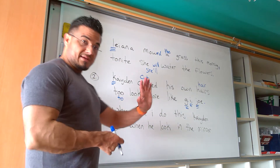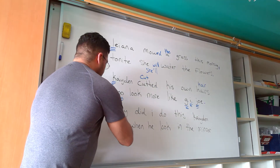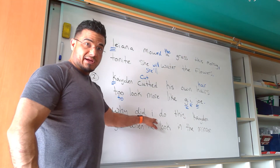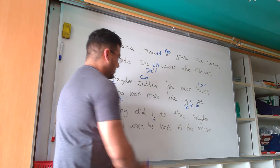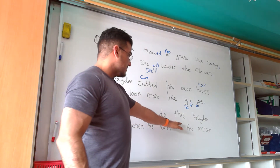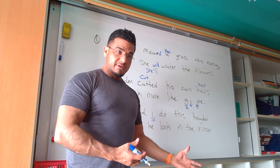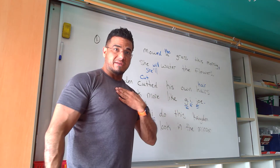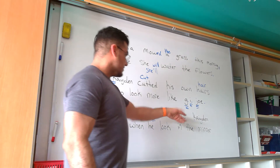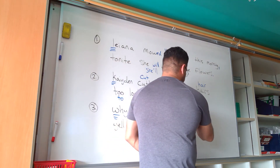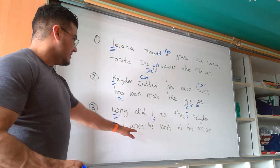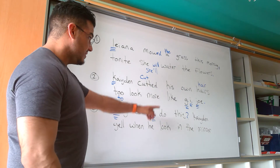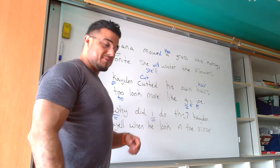Sentence number three: 'Why' — beginning of a sentence, we need to capitalize it. 'Why did I do this?' — we have the independent subject pronoun I, always capitalize it. So 'Why did I do this?' is an interrogative — it's a question Caden is asking himself, so it's rhetorical. That's a question mark. And continuing: 'Caden yelled when he looked in the mirror' — this is something he's already done, so we have two verbs that need to be put in the past tense.